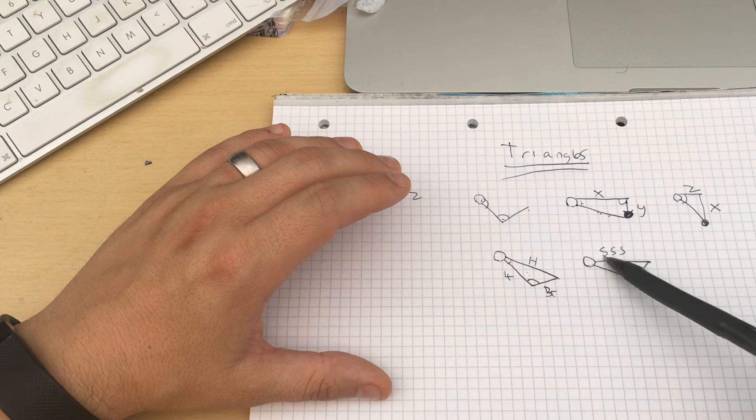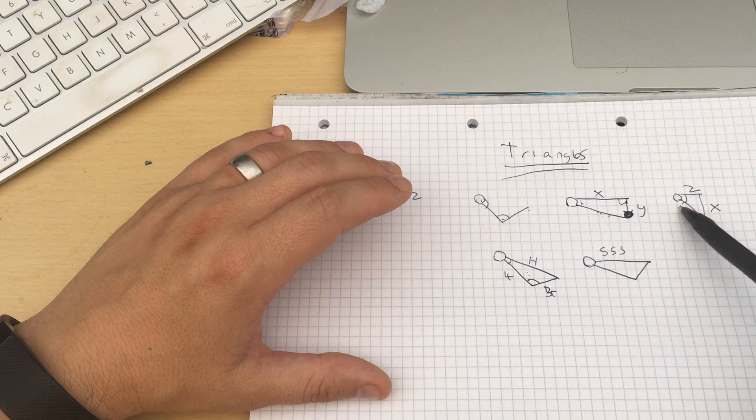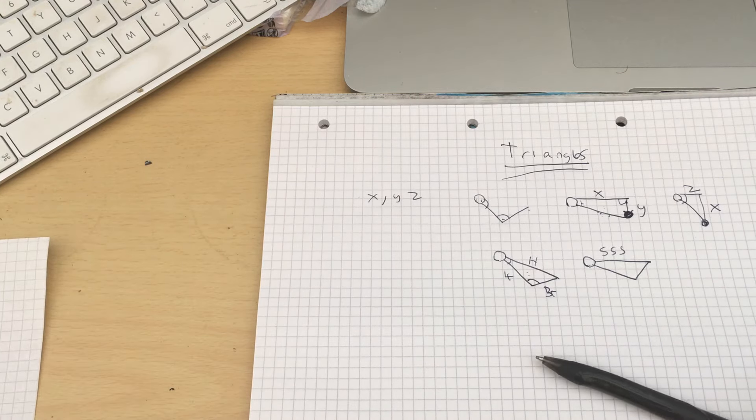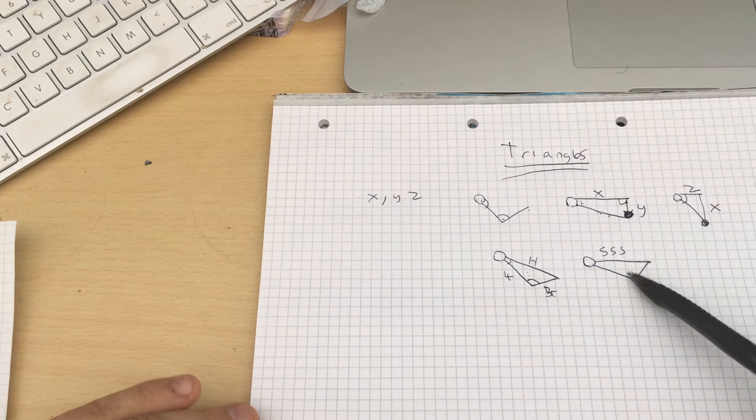And then you basically rotate this down by what you worked out here and then across by what you worked out here. Now, this may sound a bit like black magic. It's very simple trigonometry, except maybe the SSS triangle. I don't remember learning that at school, to be honest.